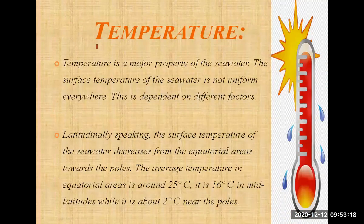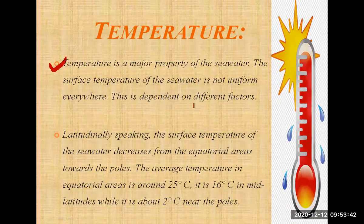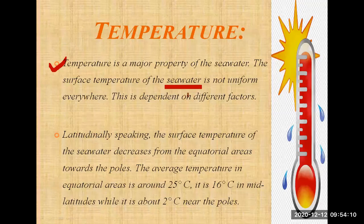Let's start with the first major property of seawater: temperature. This word is very familiar to all students. Temperature is a major property of seawater. The surface temperature of seawater is not uniform everywhere — it is dependent on different factors and is continuously changing.